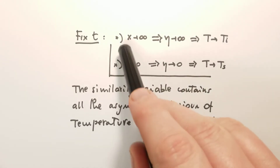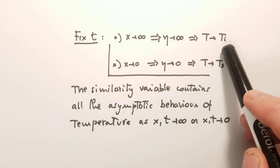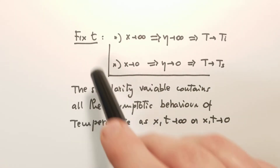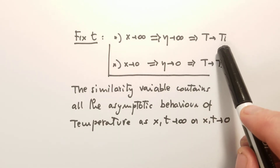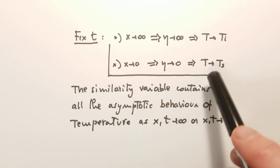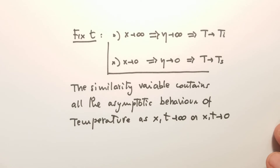If instead we fix the time and let x go to infinity, then eta also goes to infinity and the temperature approaches Ti. This makes sense because we are so far away from the surface that at a given time the temperature is still at the initial condition. Conversely, if we take x going to zero, we recover the surface temperature Ts — that's the temperature fixed on the surface at any time. It's very important to analyze these asymptotic behaviors as time or x go to infinity or zero.